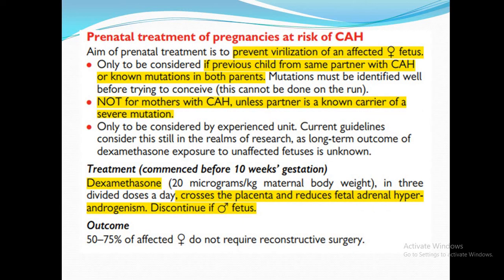Regarding prenatal treatment of pregnancies at risk for CAH: the aim is to prevent virilization of the affected female fetus — not the male fetus. It is considered if a previous child from the same partner had CAH, or if CYP21 mutations are found in both parents. It is not indicated for mothers with established CAH unless the partner is a known carrier of a CYP21 mutation. Treatment should be managed by an experienced unit.